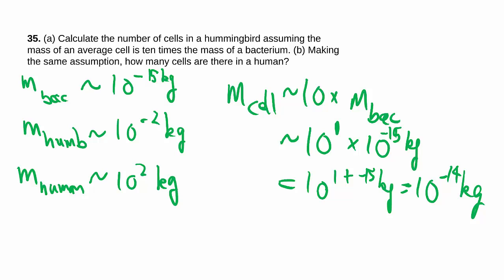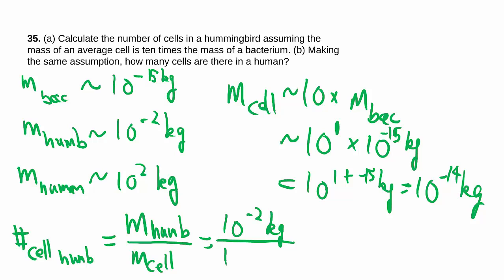To get the number of cells, so number of cells in the hummingbird, what we're essentially doing is we're taking the hummingbird mass and dividing that by the cell mass. So 10 to the minus 2 kilogram over 10 to the minus 14 kilogram, and when we divide we're subtracting powers of tens.